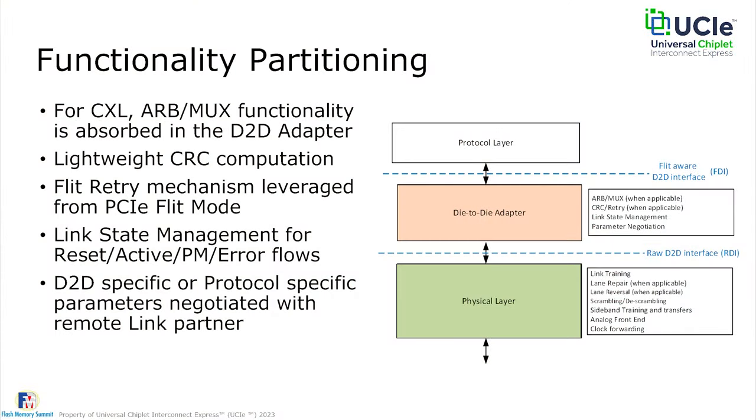Because UCIe supports many protocols and modes, in the interest of interoperability, the adapter must negotiate with the remote link partner which mode and FLIT format to operate in. For every protocol, at least one mandatory FLIT format is defined, plus optional formats offering different levels of link efficiency. The adapter's role is to negotiate that with the link partner along with other protocol features.